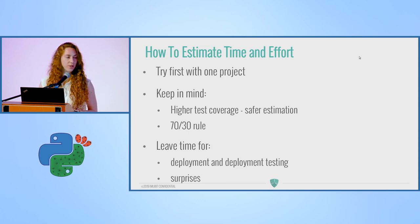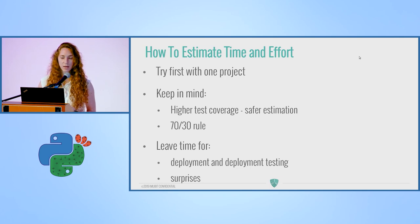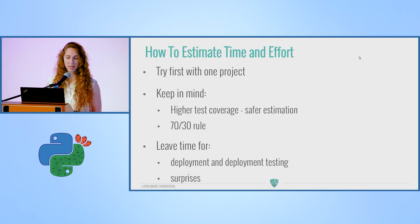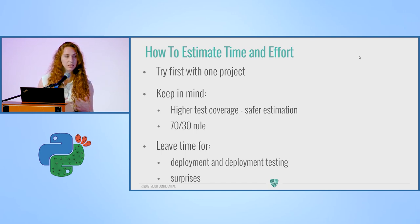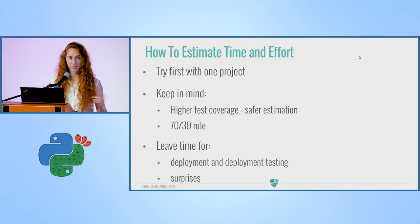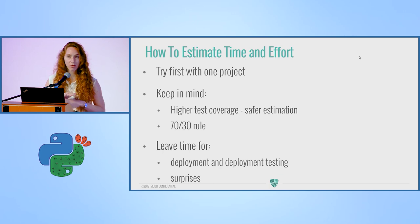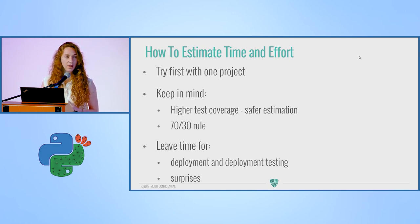After going through the migration process and plan, you're probably asking how to estimate the time and effort. My advice: just try — choose your first project, migrate it, and use that to understand how long the rest will take. A few things to keep in mind: higher test coverage gives a safer estimation; 70% of the code will take 30% of the time and vice versa, so being halfway through the tests doesn't mean you're halfway through the process. Don't forget to leave time for deployment and deployment testing — and leave time for surprises.